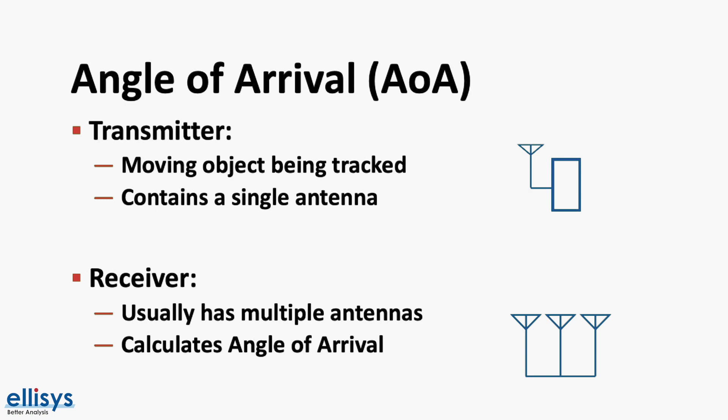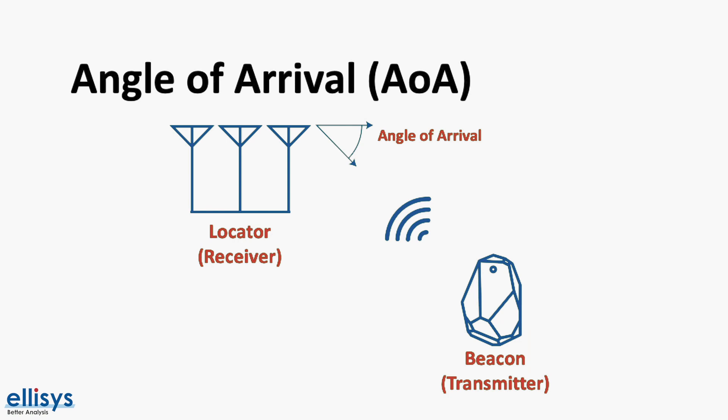Here's an example of a system that can utilize angle of arrival to determine location. In this example, the beacon is a moving device that continuously transmits advertising packets. The receiver, which is usually fixed, uses its multiple antennas to estimate the angle of arrival of the signals transmitted from the beacon.